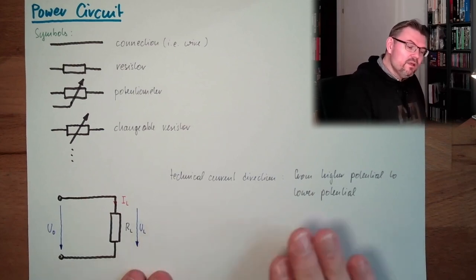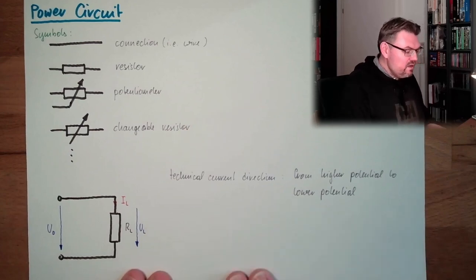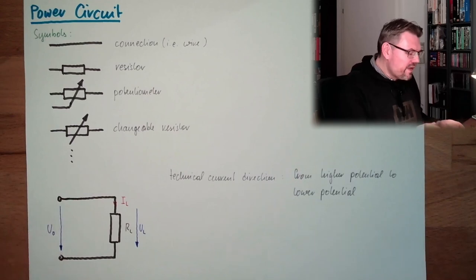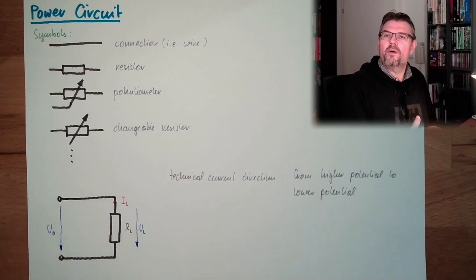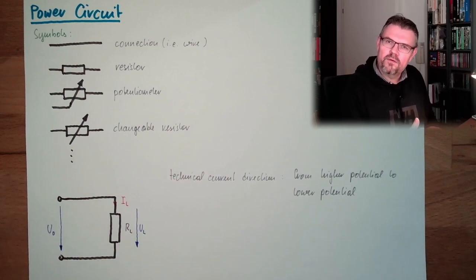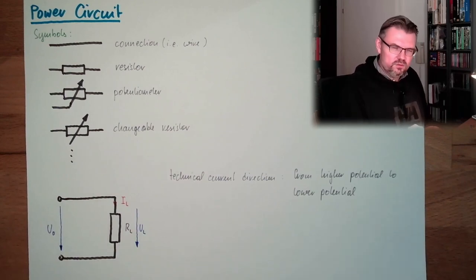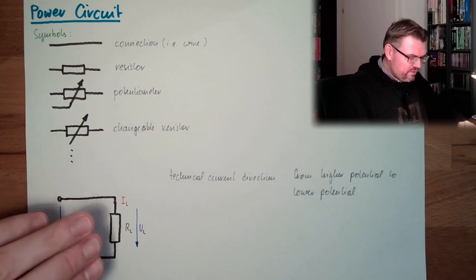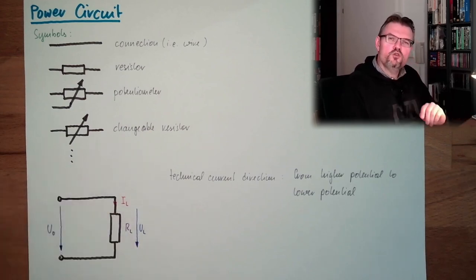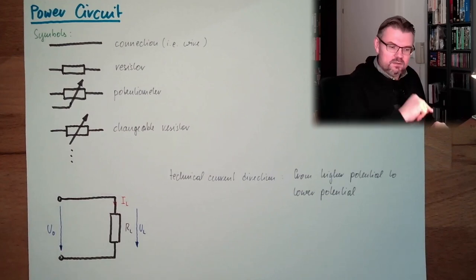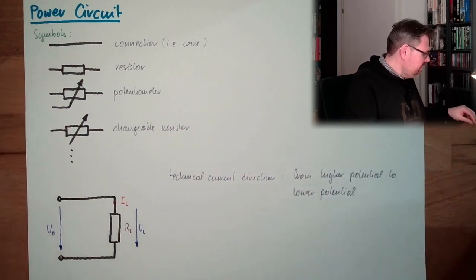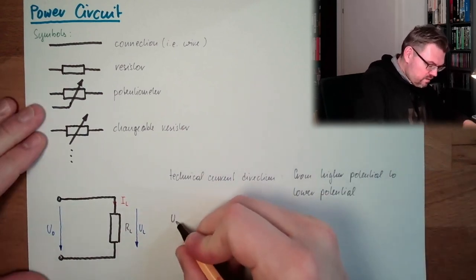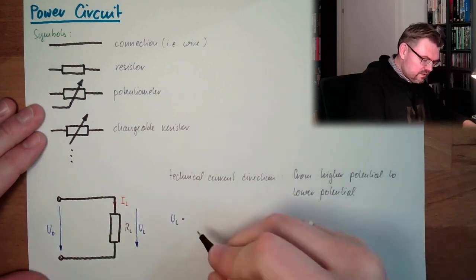And giving this into account, it is a very good idea - I said you can draw those arrows however you like. That's true. However, there is one rule you should stick to. The rule is that at a resistance, voltage and current should point in the same direction. Because then there is this Ohm's law, that UL is RL multiplied by IL.